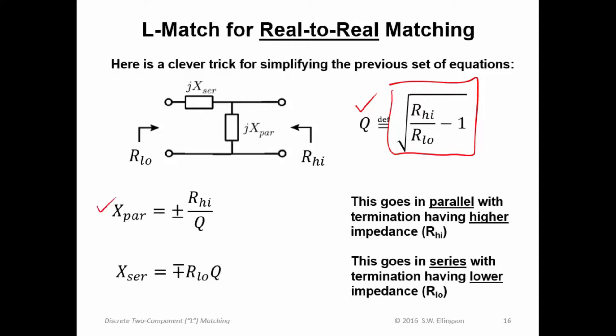Here they are. X_par becomes simply plus or minus, again two solutions, R_high divided by Q. And the series reactance becomes minus or plus, depending on which one you chose for X_par, R_low times Q. So dramatically simpler way to solve those equations or to compute those values when you're doing real-to-real matching. It's very common when doing real-to-real matching simply to first compute this parameter Q and then to calculate parallel and series reactances using these expressions, which are based on Q.